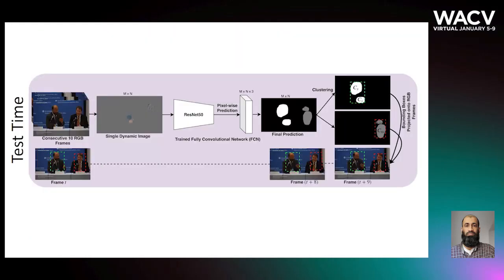At test time, first a single dynamic image is constructed from 10 consecutive RGB frames. Using the trained fully convolutional network, that dynamic image is segmented such that a pixel-wise prediction having three channels — background, speaking, and not speaking — is obtained. These predictions are merged into a single image, called the final prediction. The size of the final prediction image is the same as the input dynamic image and contains pixels having one of the three aforementioned semantics.